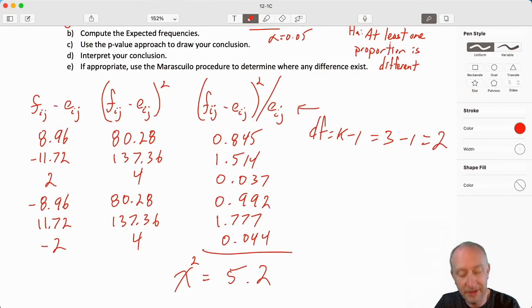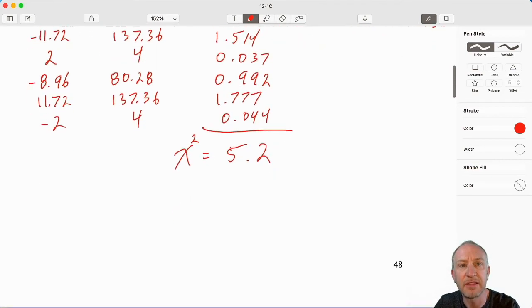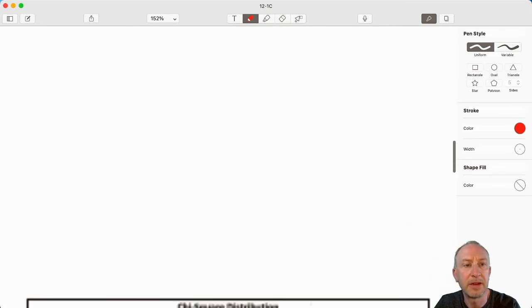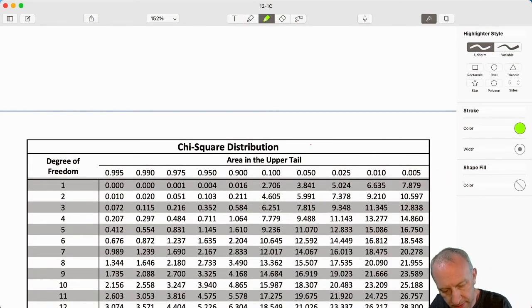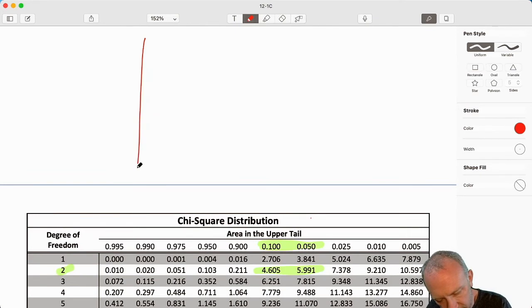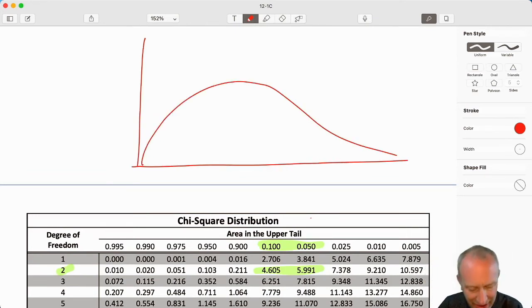So we're doing this test at the 5% level of significance. So I'm going to come down to my chi-squared. And my test statistic was 5.2. So I'm in between here. My p-value is in between those two.